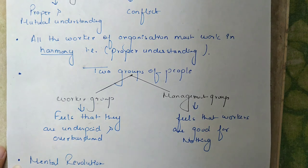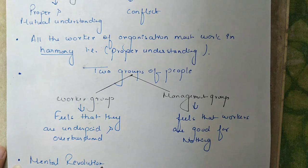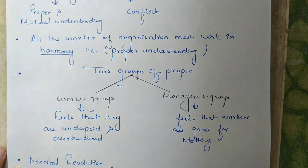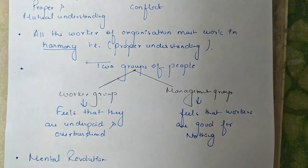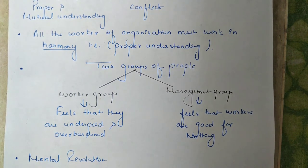Rather than going on strike, Japanese workers tie a black ribbon to show their dissatisfaction and gain the sympathy of managers. So the management must work almost side by side with the workers, helping and encouraging them, so that the workers can contribute to their best level.